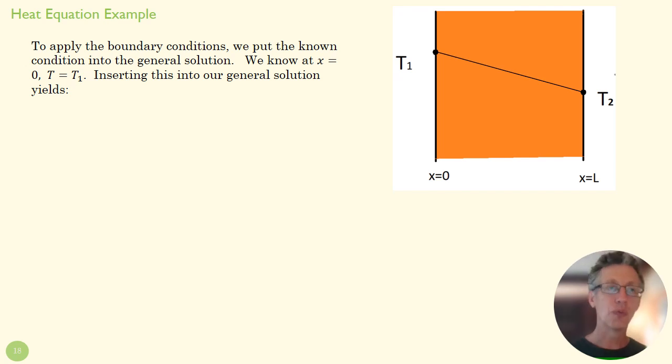So to apply our boundary conditions, we take our known general solution and we put our boundary conditions into that solution. So we know when X is equal to zero, T is equal to T1. So we take this equation and we put X equal to zero, T is equal to T1, because our general solution was T equals C1 times X plus C2. We solve this guy and it tells us C2, our second constant, is actually just T1, whatever our temperature at the left side was.